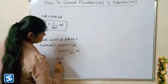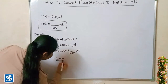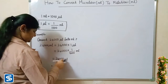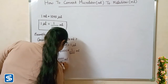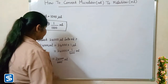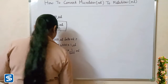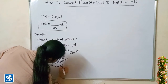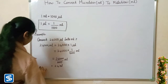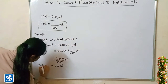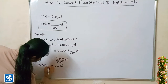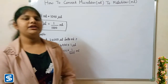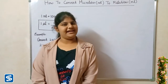So 24,000 divided by thousand millilitres. Here zeros and zeros get cancelled. So when we divide 24,000 by thousand millilitres, our answer will be 24 millilitres. So 24,000 microlitres is equal to 24 millilitres.